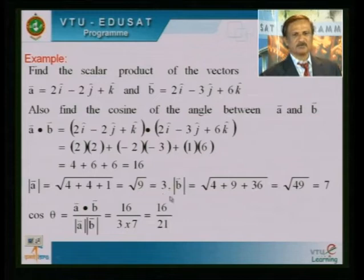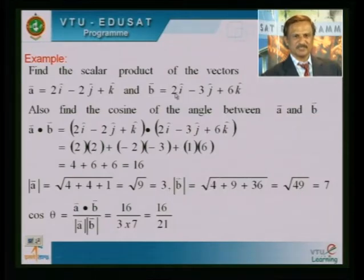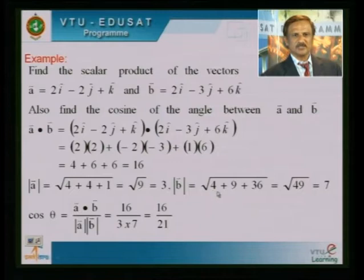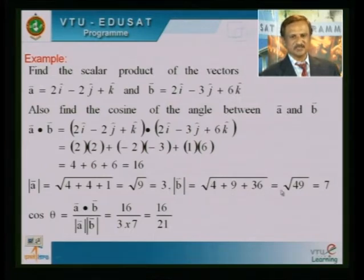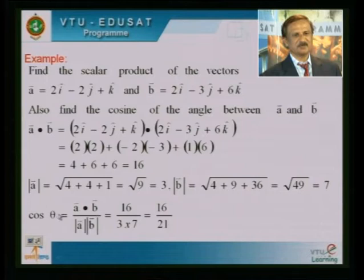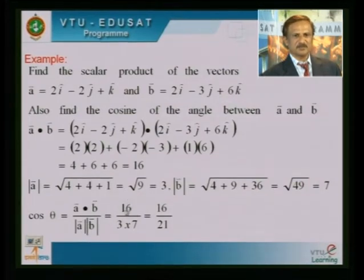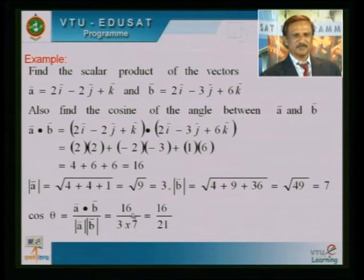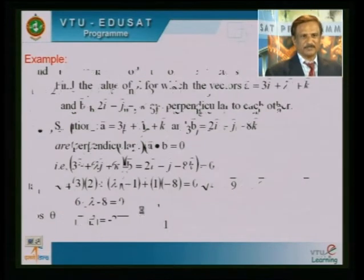In the similar way, I want to calculate the value of modulus of b. b = 2i − 3j + 6k. Modulus of b = √(2² + (−3)² + 6²) = √(4 + 9 + 36) = √49 = 7. Similarly, you can calculate cos θ. cos θ = (a·b) / (|a|·|b|) = 16 / (3 × 7) = 16/21.